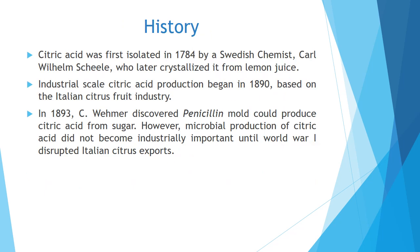Coming to the history of citric acid — citric acid was first isolated in 1784 by Swedish chemist Karl Wilhelm Scheele, who crystallized it from lemon juice. About 90% of the component in lemon juice or any other citrus fruit is citric acid. Initially, citric acid was produced and purified from citrus fruits, but as the microbial process is less expensive than buying fruits and extracting citric acid, microbial production is now preferred.